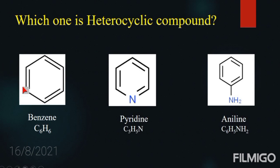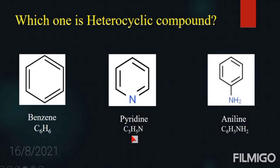Let us look at some examples. The first one is benzene, where the ring is made up of only carbon atoms. Its molecular formula is C6H6. These types of compounds are called homocyclic or carbocyclic compounds. The next example is pyridine. Here, the total number of ring atoms is six — five carbon atoms and one nitrogen atom. Its molecular formula is C5H5N, so we can call it a six-membered heterocyclic compound.